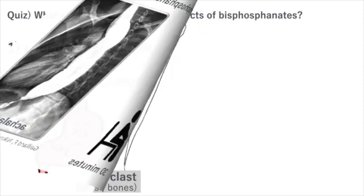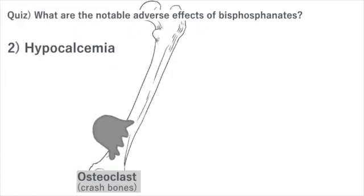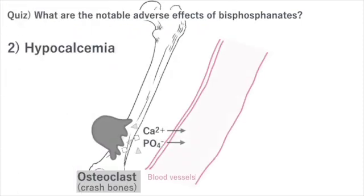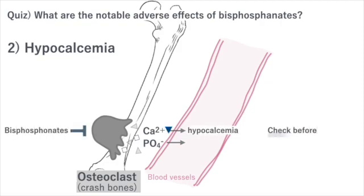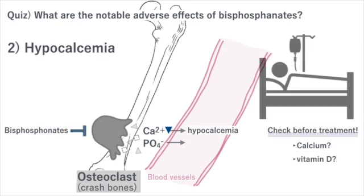Second, transient hypocalcemia is a common issue secondary to bisphosphonate use, as inhibiting osteoclasts reduces the release of calcium into the blood. Calcium and vitamin D deficiencies should be corrected before initiating bisphosphonate therapy, particularly with intravenous bisphosphonates.